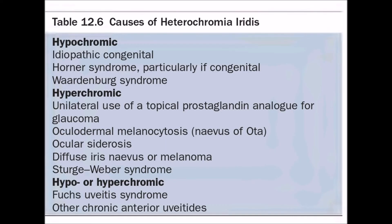The most important differential diagnosis is that of heterochromia iridis. A hypochromic eye can occur in cases of: idiopathic congenital, Horner syndrome particularly if congenital, and Waardenburg syndrome. A hypochromic eye can also occur with unilateral use of topical prostaglandin analogs for glaucoma, oculodermal melanocytosis or nevus of Ota, ocular siderosis, diffuse iris nevus or melanoma, and Sturge-Weber syndrome. Hypo- or hyperchromia can also occur in cases of Fuchs uveitis syndrome.